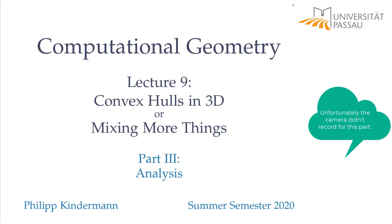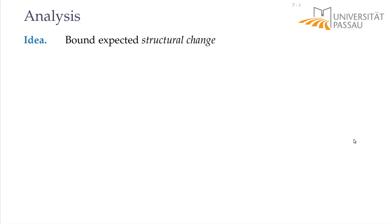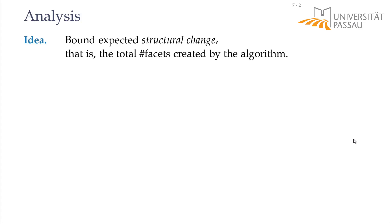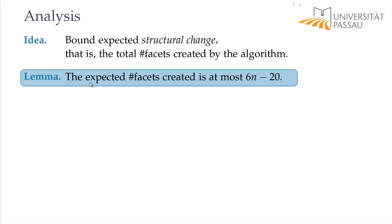Let's analyze the running time in the expected case. The idea is to bound the expected structural change of the convex hull — specifically, the number of facets created by the algorithm in every step. We want to prove that the expected number of facets created in the whole algorithm is at most 6n minus 20.